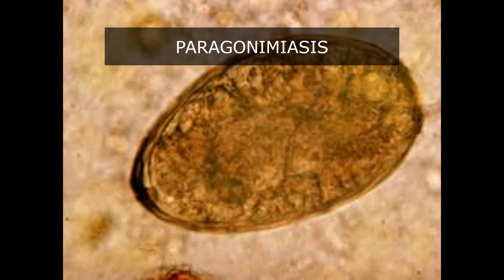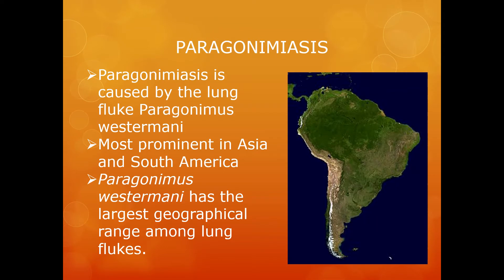A very good day everyone. In today's video we are going to explore a lung fluke which is responsible for causing an infection called paragonimiasis. Paragonimiasis is a foodborne parasitic infection caused by a lung fluke. This particular lung fluke also has the largest geographical range among lung flukes and it is called Paragonimus westermani. They are especially prominent in Asia as well as South America.